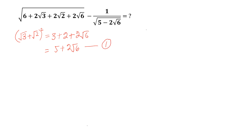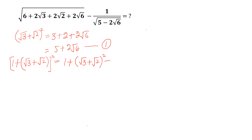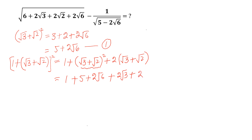Now the next step: we take (1 + √3 + √2) whole square, which equals 1 + (√3 + √2)² + 2(√3 + √2). Simplifying, using equation 1 this becomes 1 + 5 + 2√6 + 2√3 + 2√2. Rearranging, we get 6 + 2√3 + 2√2 + 2√6.